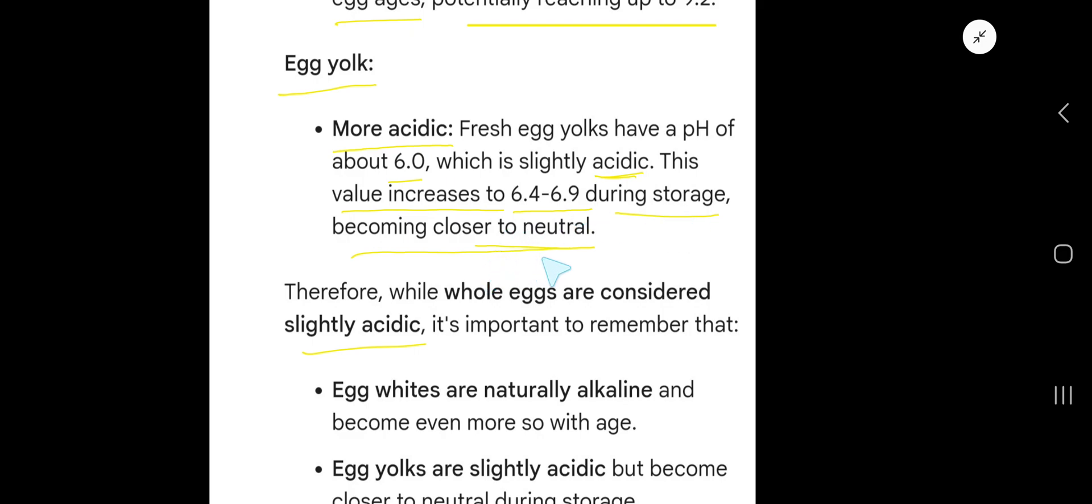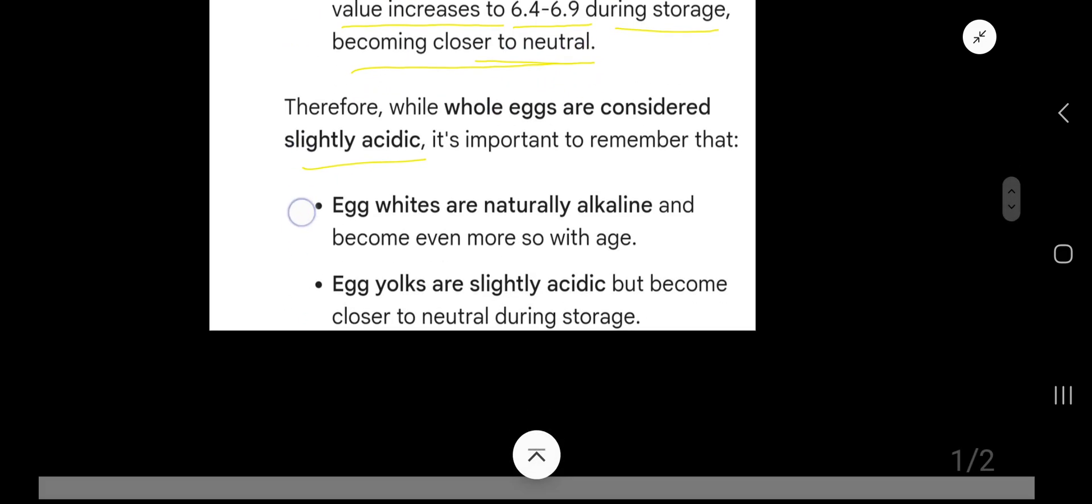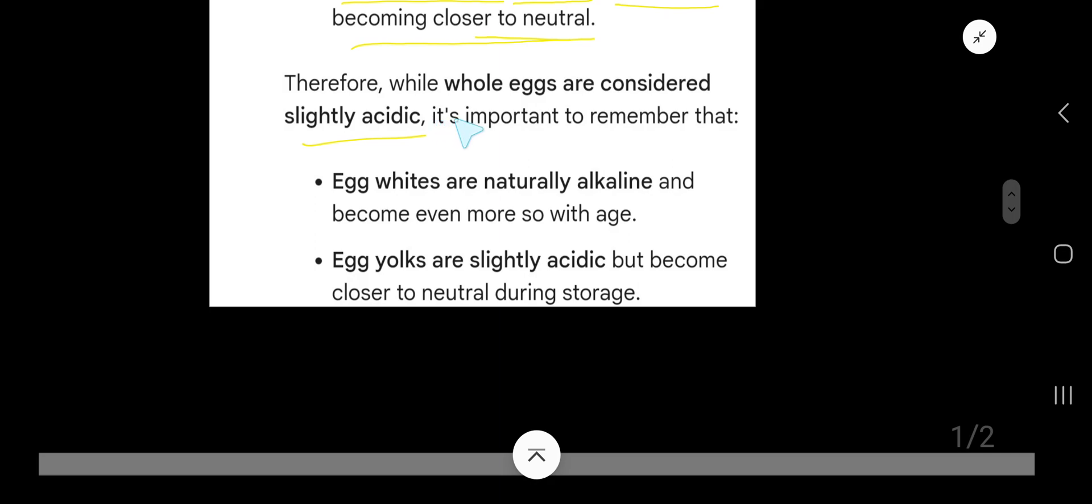becoming closer to neutral. Therefore, while whole eggs are considered slightly acidic, it's important to remember that egg whites are naturally alkaline and become even more so with age. Egg yolks are slightly acidic but become closer to neutral during storage. Thank you for viewing this video. Be well.